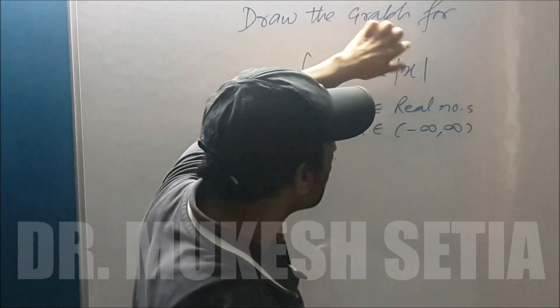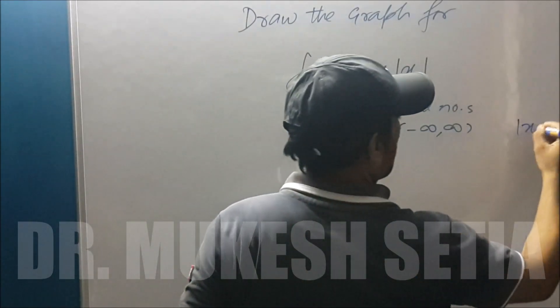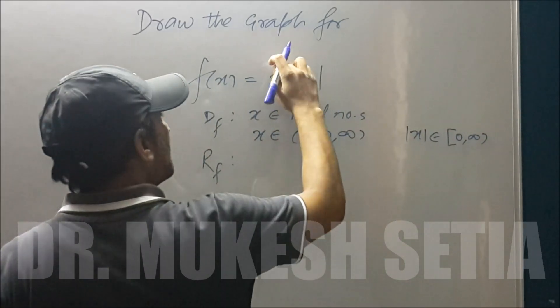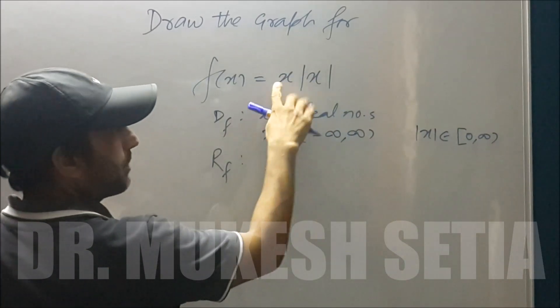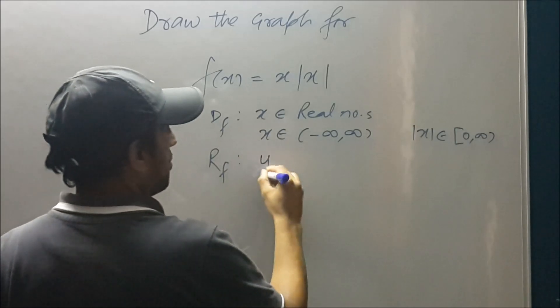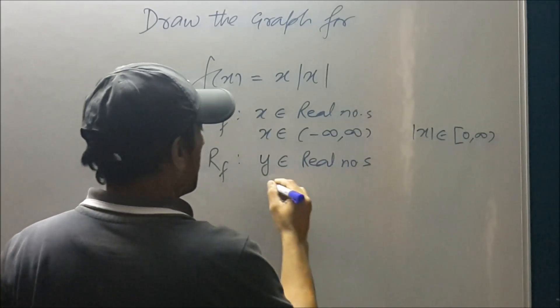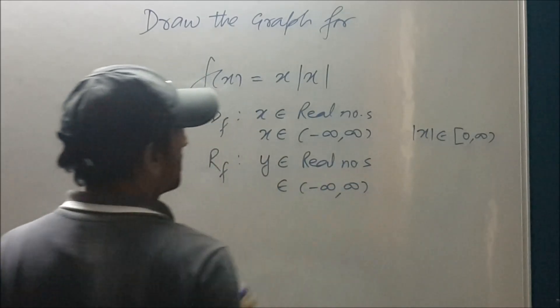Had it been only mod function then everyone knows that mod function is a closed interval of zero to open interval of infinity. But because of x present here as a product, the range is also the real numbers. So both domain and range are minus infinity to infinity.